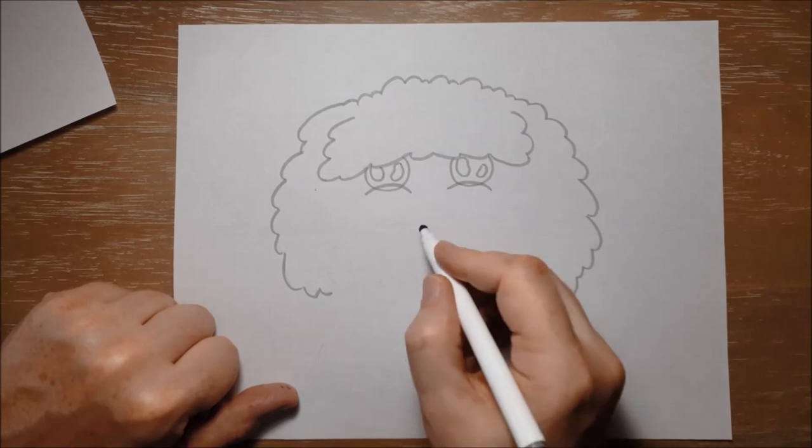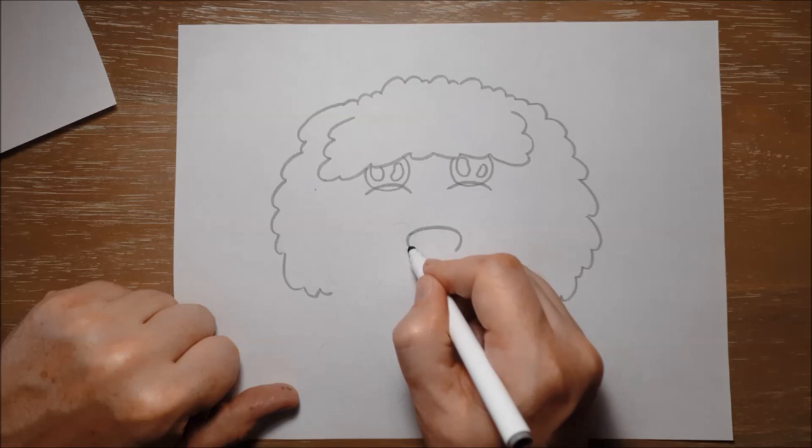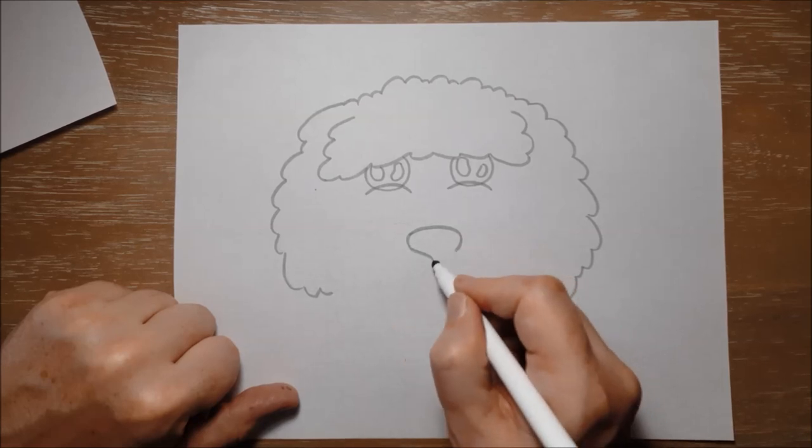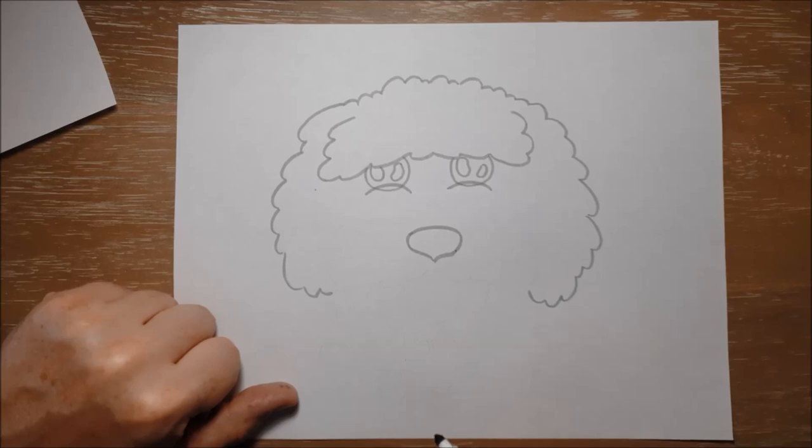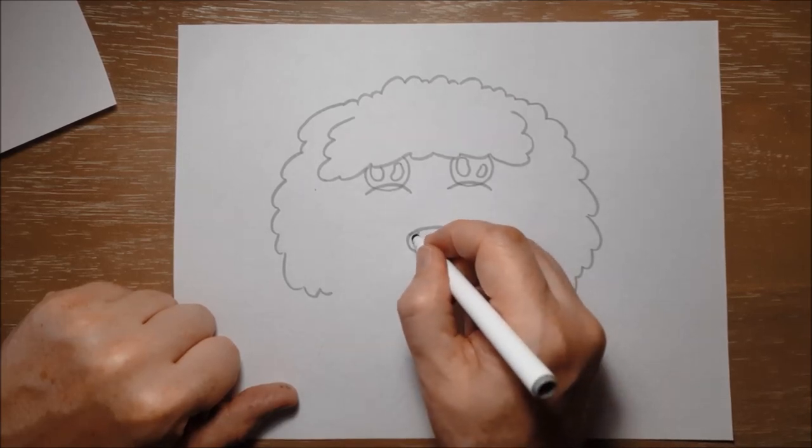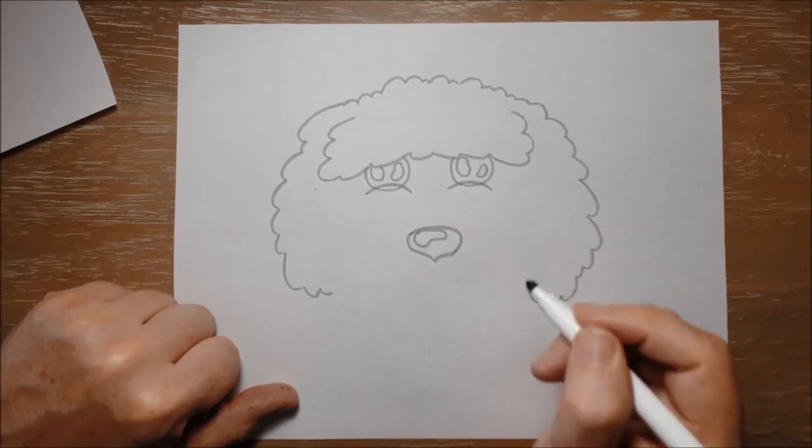Now for her nose I'm going to make a sort of an oval shape but at the bottom I'm going to bring it down a little bit like the bottom of a heart just like that. And then I'm going to put a big light bubble right there on her nose.